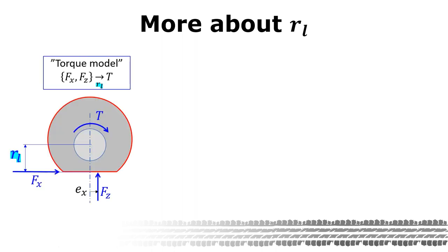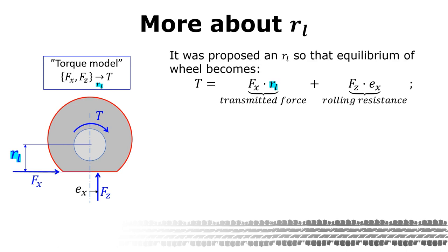Now, some more about the loaded radius. We had this drawing from the slide before the previous slide. And here is the equilibrium where the loaded radius appears. It's a free body diagram where the torque T is balanced by the forces. And you see that the longitudinal force fx has the loaded radius as lever.